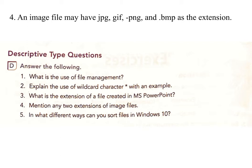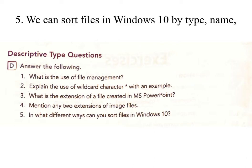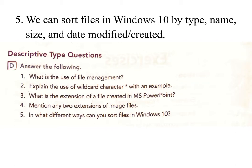Question 4: Mention any two extensions of image files. Answer: An image file may have .jpg, .gif, .png, or .bmp as its extension. Question 5: In what different ways can you sort files in Windows 10? Answer: We can sort files in Windows 10 by type, name, size, and date modified or created.